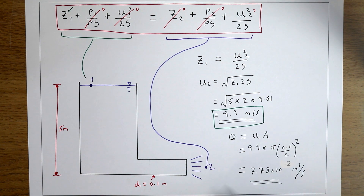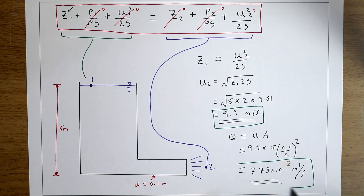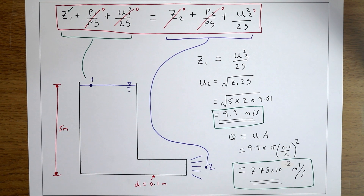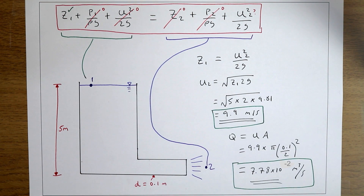In this video we've looked at where Bernoulli's equation comes from, and by assuming conservation of energy we've applied it between two points in a system to give us the velocity of water in a pipe from a head of water behind the pipe.